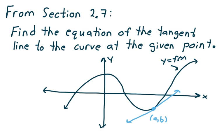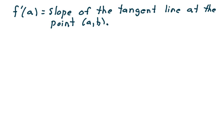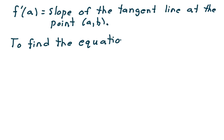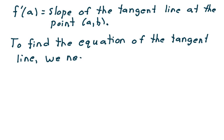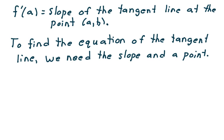In other words, f prime of a represents the slope of that blue line. And to find the equation of the tangent line, we need the slope and a point. Keep in mind, the point has already been provided to us. The only thing we need to calculate is that slope. With that in mind, let's take a look at an example.